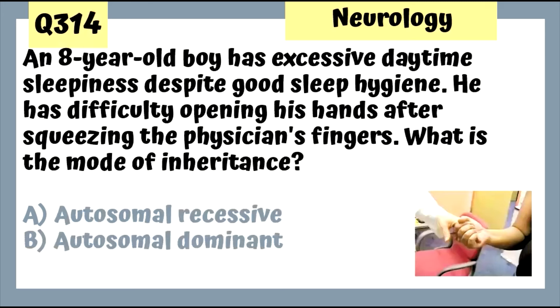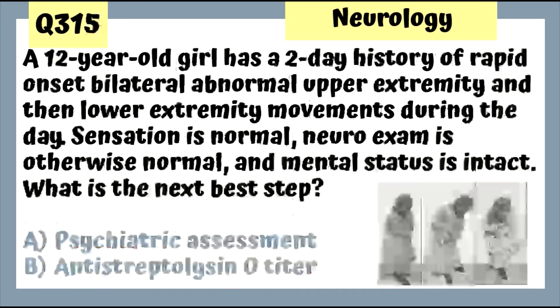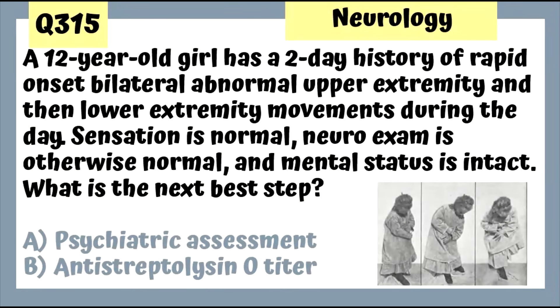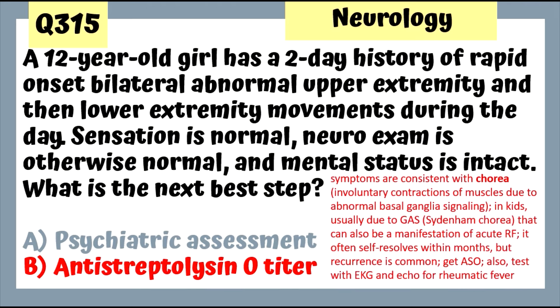Question 314: An 8-year-old boy with excessive daytime sleepiness and difficulty opening his hands after gripping — this is myotonic dystrophy. Question 315: A 12-year-old girl with rapid onset bilateral abnormal upper then lower extremity movements, normal sensation, normal neuroexam and mental status — she's having chorea. Get an antistreptolysin O titer — in kids it's usually due to Group A strep, Sydenham's chorea. Also test with EKG and echo for rheumatic fever.